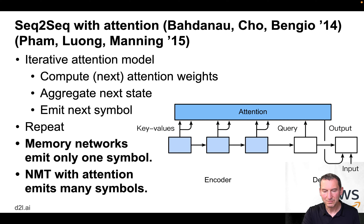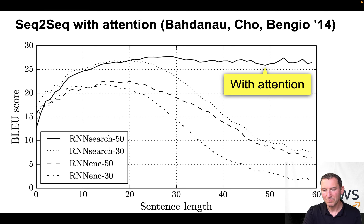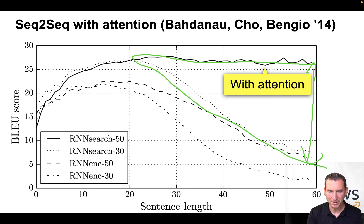In an iterative attention model, you compute the next attention weights and keep going. There's a small twist: in a memory network you do all those operations and emit only one symbol at the end, whereas in neural machine translation with attention you emit the entire sequence — but otherwise it's pretty much the same. This works very well: with memory, as sequences get longer, there is a very substantial gap in accuracy, whereas for shorter sequences it performs as well as expected.